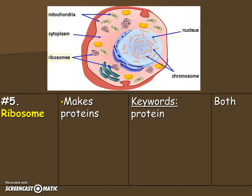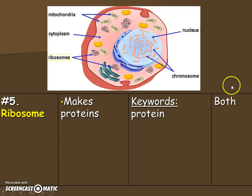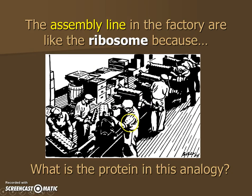Ribosomes — be careful to say ribosomes, like rye bread, not ribosomes like your ribs. This organelle is in charge of making the proteins that the Golgi will package. Ribosomes are really important and all about proteins. They're not only in plants and animal cells — they're in all cells, even bacterial cells. They look like the dots or freckles of the cell, kind of like sesame seeds. For our analogy, we think of ribosomes like the people on an assembly line who are in charge of making a product — in this case, protein.